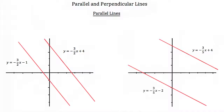Now let's look at parallel lines in a little bit more detail. Here we're given two sets of parallel lines. In our first set, our first line has the equation y is equal to negative 3 halves times x plus 4. This means we have a y-intercept of positive 4, which we do — it's right there. And then our slope, or rise over run, is negative 3 halves, which means we go over 2 and down 3.